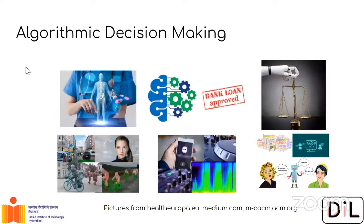Let's get started. Algorithmic decision making is everywhere. Almost any application you think of has algorithms making decisions. Take healthcare, for example. There are algorithms that take patient data — different parameters measured about a patient's health — and try to infer decisions to help the experts. These days, a lot of things are being fed to machines for their inference to be considered.